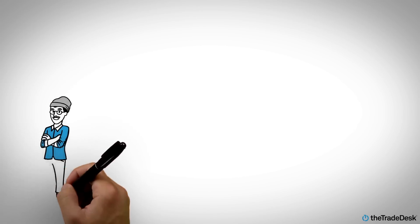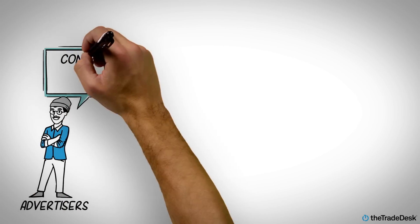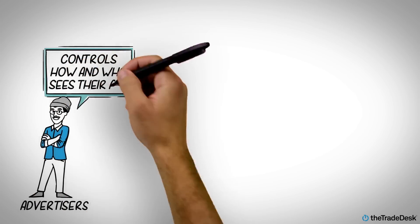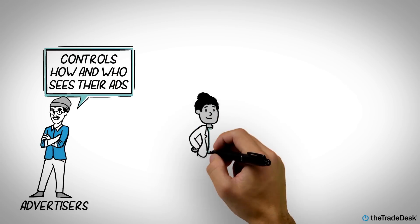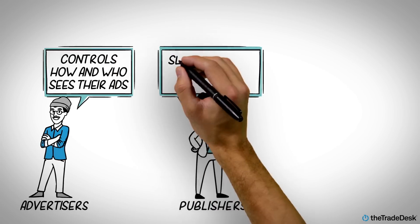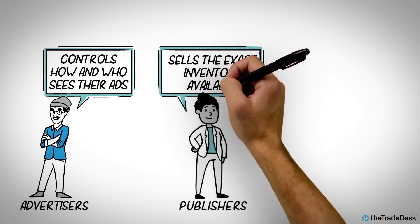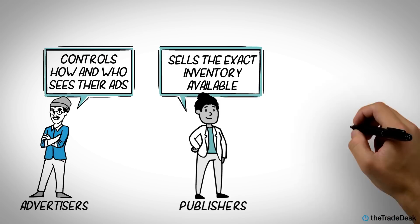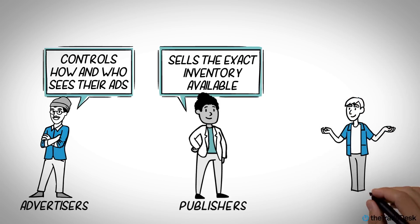This system puts the power back in the hands of advertisers by enabling them to decide the context and recipients of their ads. It also allows publishers to sell the exact amount of inventory available, since the marketplace operates in real time.